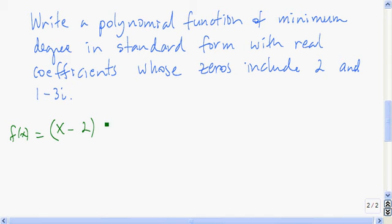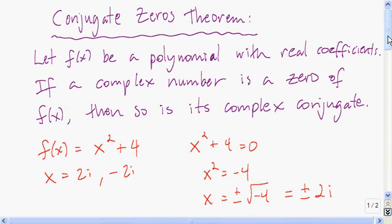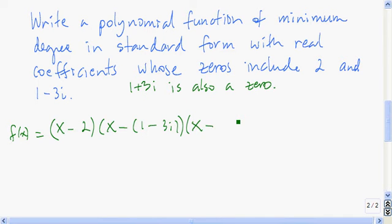Since 1 minus 3i is a zero, x minus that quantity is going to be a factor. However, from the conjugate zeros theorem, since 1 minus 3i is a zero, then 1 plus 3i is also a zero. So that means we have a third factor of x minus 1 plus 3i. Since this has to be a polynomial function in standard form with real coefficients, we have to multiply this out.